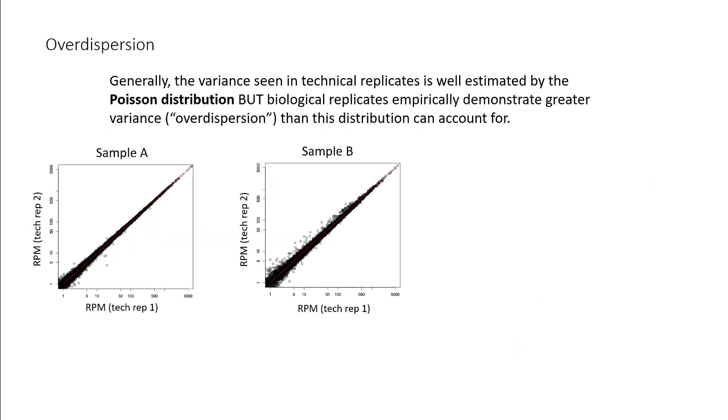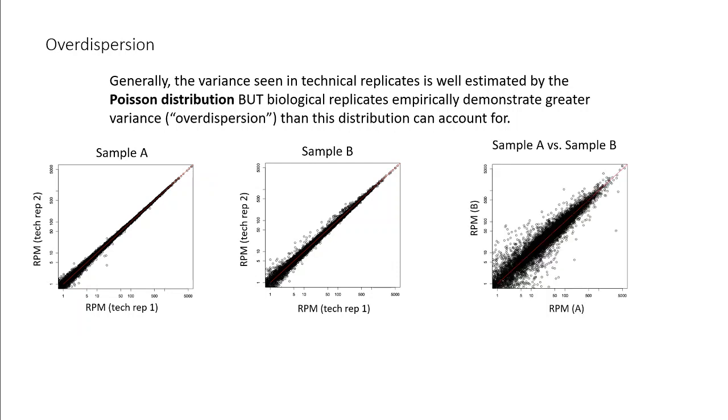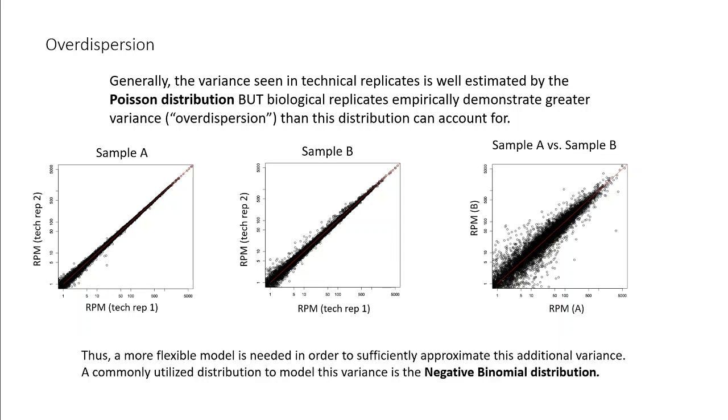However, technical and biological replicates do not show the same degree of correlation. Generally, the variance of technical replicates can be well estimated by the Poisson distribution. Here we see two biological replicates, samples A and B, both of which have two technical replicates. Comparing the variance of the left two plots, which are comparisons between the technical replicates of each sample, to the right-hand plot, which is a comparison between samples, we see a much greater variance between the biological replicates. Because of this, a more flexible model than the Poisson distribution is needed in order to approximate this additional variance. The negative binomial distribution is one such model that is commonly used.